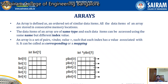An array is also a set of pairs — index comma value — such that each index has a value associated with it. This can be called a corresponding mapping. These are the index-value pairs of an array.